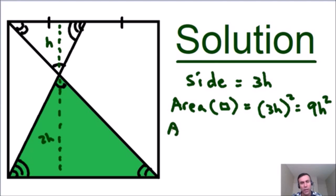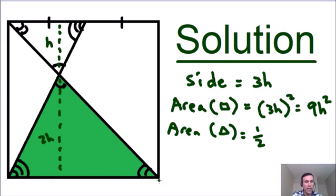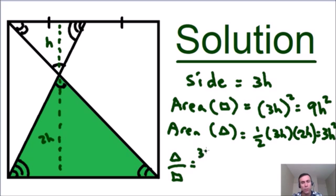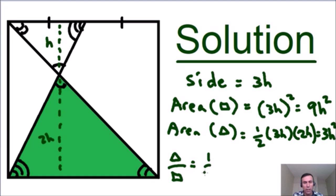We also know the area of the shaded triangle. The area of any triangle is one half the base times the height. The base of the shaded triangle equals the full side of the square, which is 3H, and the height is 2H. So the area equals one half times 3H times 2H, which equals 3H squared. The fraction of the shaded area is just the shaded triangle over the total area of the square: 3H squared over 9H squared. Cancelling H squared gives 3 over 9, which equals one third. So the fraction of the shaded area is one third of the square.